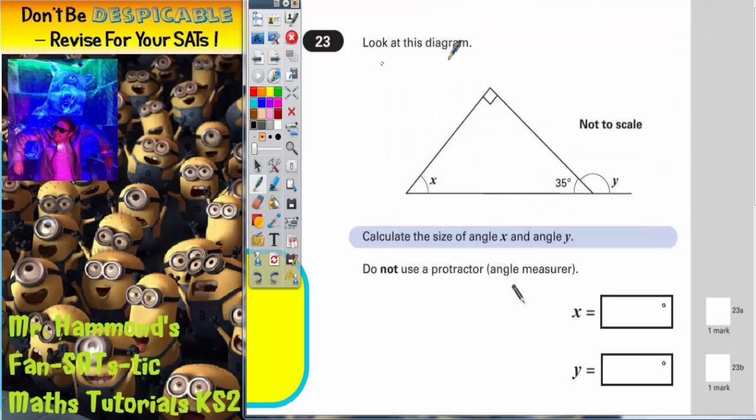Question 23. Look at this diagram. Calculate the size of angle x and angle y. Do not use a protractor or an angle measurer. Now the thing to remember with this one is because it says do not use a protractor, we've got to use some angle rules.